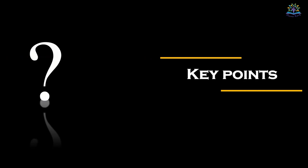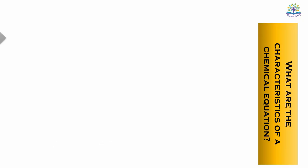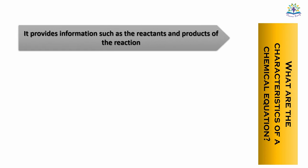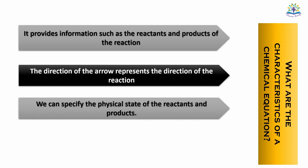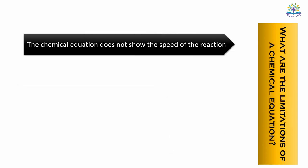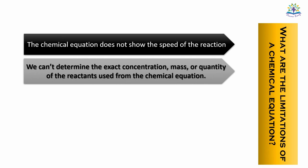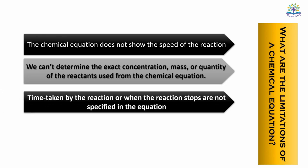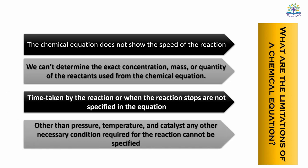The key points for the question — what are the characteristics of a chemical equation — are as follows: It provides information such as reactants and products of the reaction. It shows us the direction of the reaction. We can specify the physical state of the reactants and products. By looking at the equation, we can understand the conditions required for the reaction such as temperature, pressure, catalyst, etc. The limitations of a chemical equation are: it does not show the speed of the reaction; it doesn't specify the concentration, mass, or quantity of the reactants used; we cannot specify the time taken by the reaction or when the reaction stops; and other than pressure, temperature, and catalyst, we cannot specify any other necessary conditions required for the reaction.